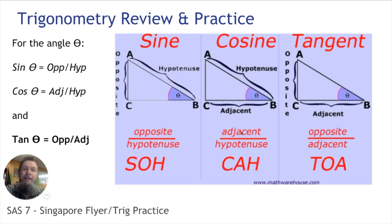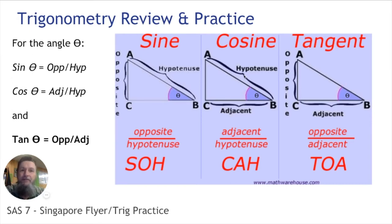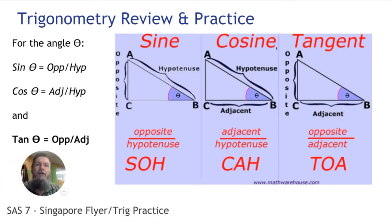Cosine of theta is equal to the ratio of the adjacent side to the hypotenuse — that's the side right next to the angle, divided by the hypotenuse, the longest side. We are talking about right triangles. Tangent of theta is the ratio of the opposite side over the adjacent side. SOH-CAH-TOA: sine equals opposite over hypotenuse, cosine equals adjacent over hypotenuse, and tangent equals opposite over adjacent.